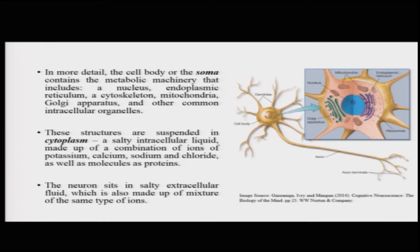The soma includes the nucleus, the endoplasmic reticulum, a cytoskeleton, mitochondria and the Golgi apparatus, and other common intracellular organelles. These structures are suspended in a salty intracellular liquid called the cytoplasm, which is composed of ions of three main kinds of molecules and some proteins. These three molecules are very important: they are calcium molecules, sodium molecules, potassium molecules and chloride ions. All of these ions combine to form this intracellular liquid called the cytoplasm.